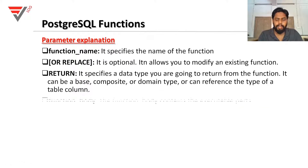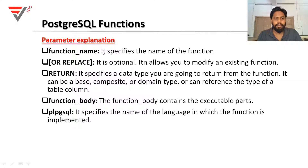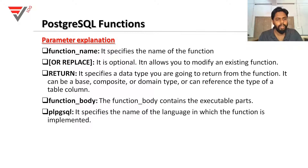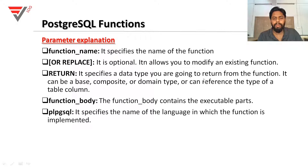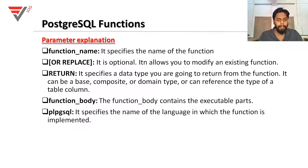Let us look at the example and define the parameters. Function name specifies the name of the function — like CREATE OR REPLACE FUNCTION. It is optional — it allows you to modify an existing function. Then RETURN specifies the data type you are going to return from the function — it can be base, composite, or domain. The function body contains the executable part, that is the main task. The language section specifies PL/pgSQL as the language in which the function is implemented.